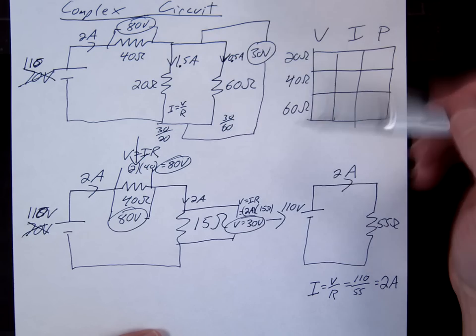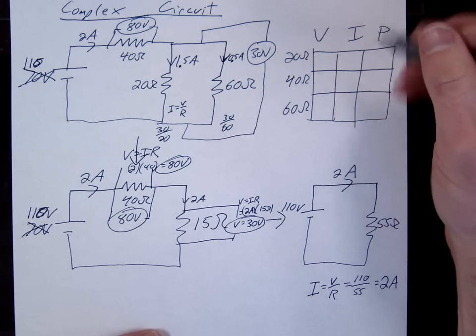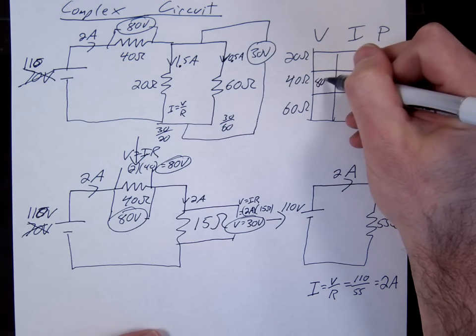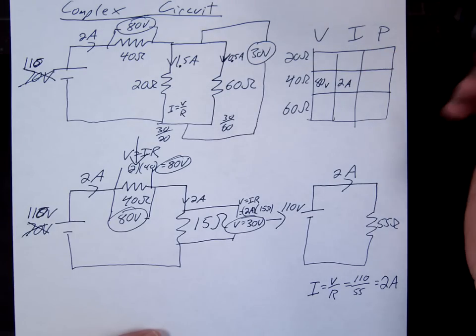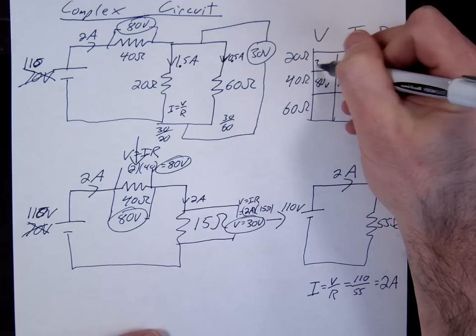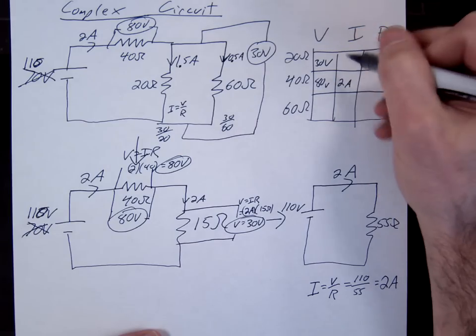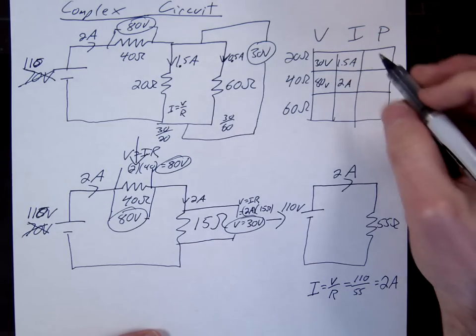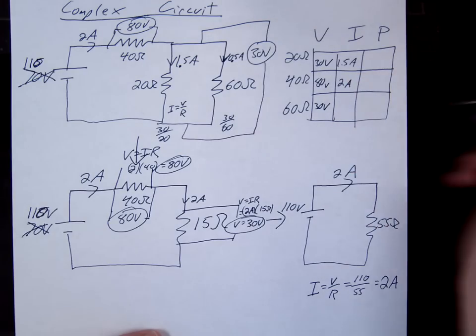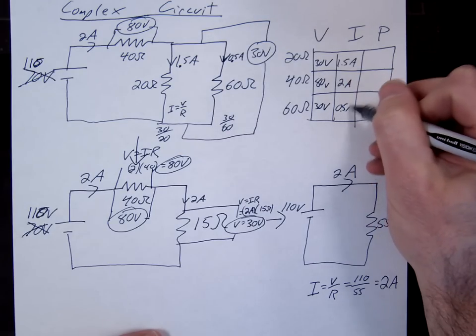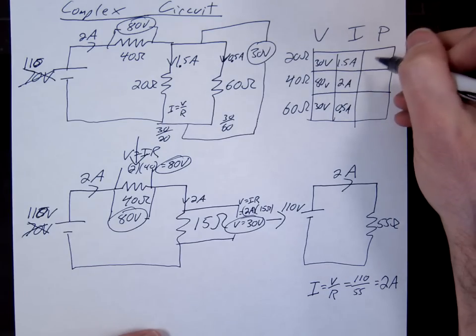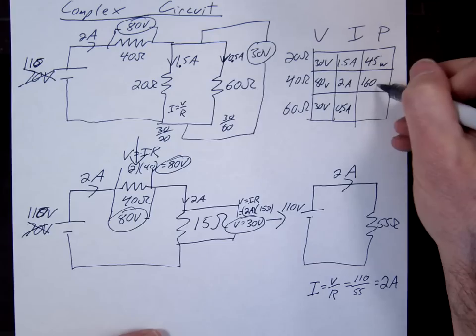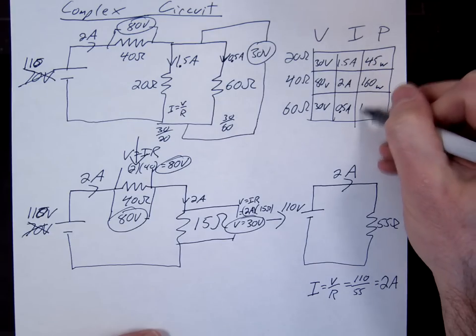Okay, so let's just go fill in our table. So our forty ohm, and you can do this as you go. I would recommend doing that. That way you can kind of see what's missing and what you still need to find. So the twenty ohm was thirty volts and one point five amps. And the sixty ohm was thirty volts and zero point five amps. And then the powers, once you know the V's and the I's, the power should be very easy. Forty five watts, one sixty watts, fifteen watts.